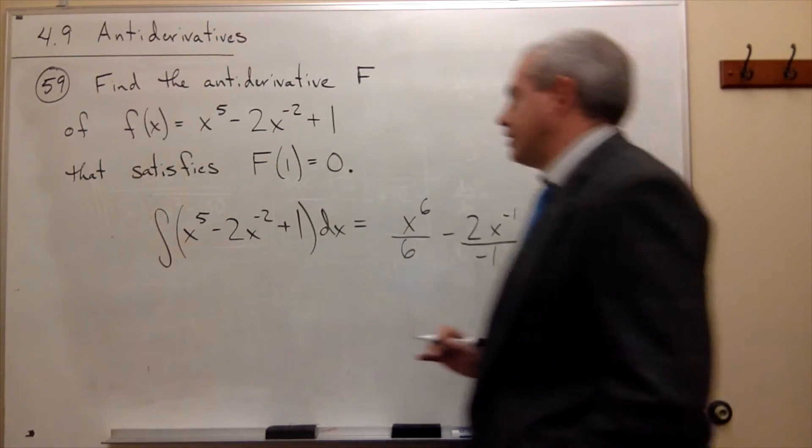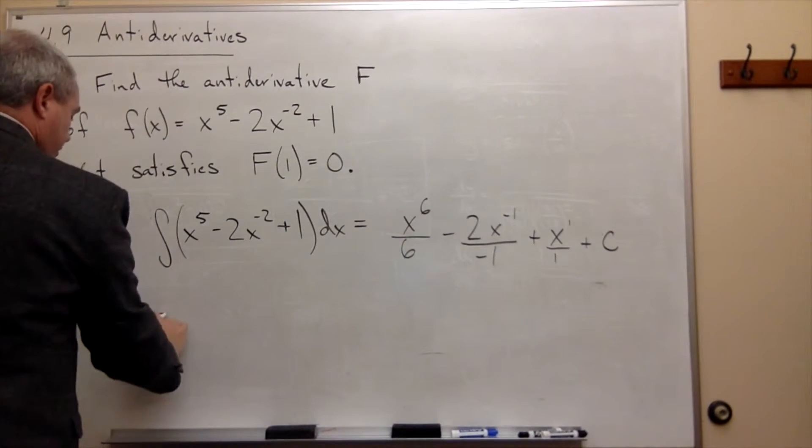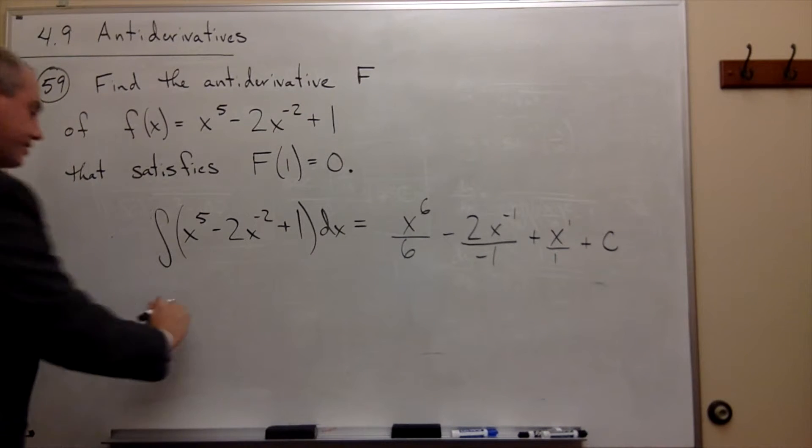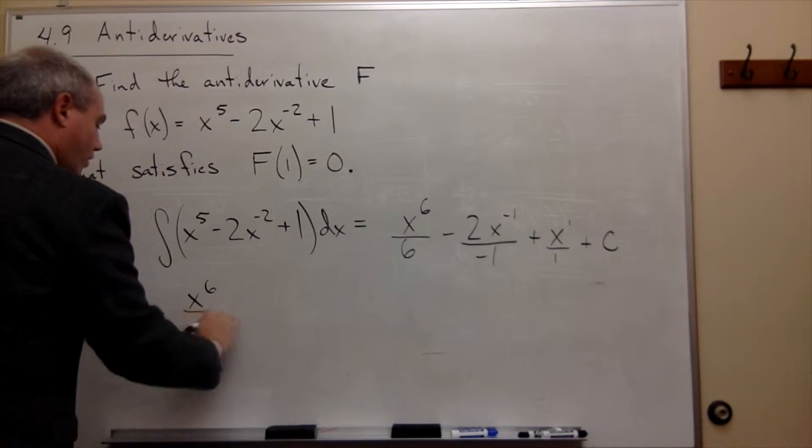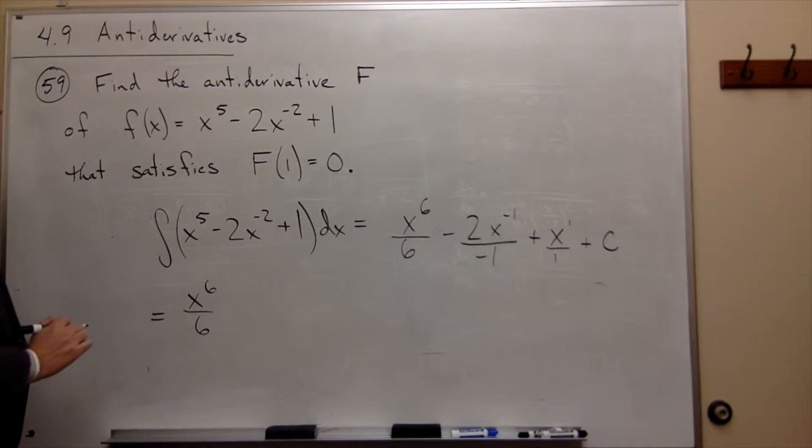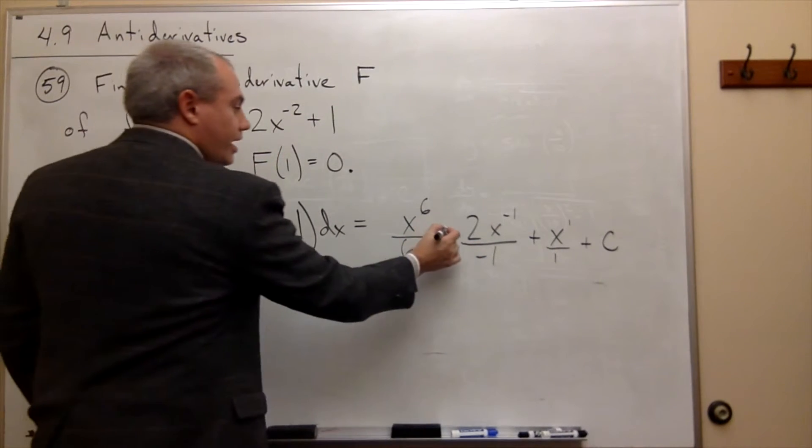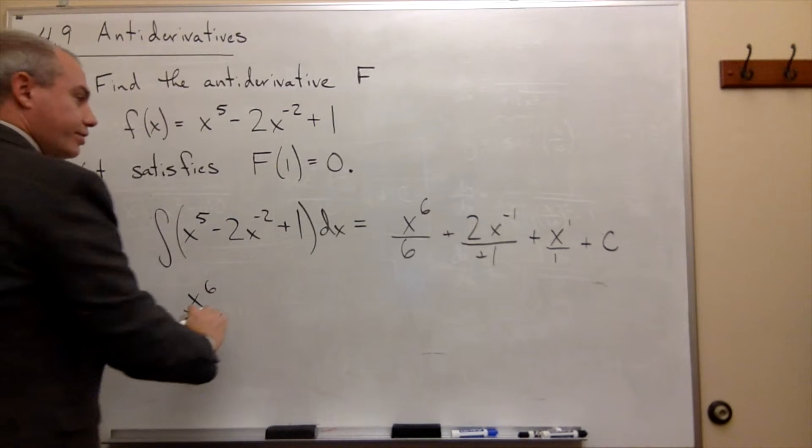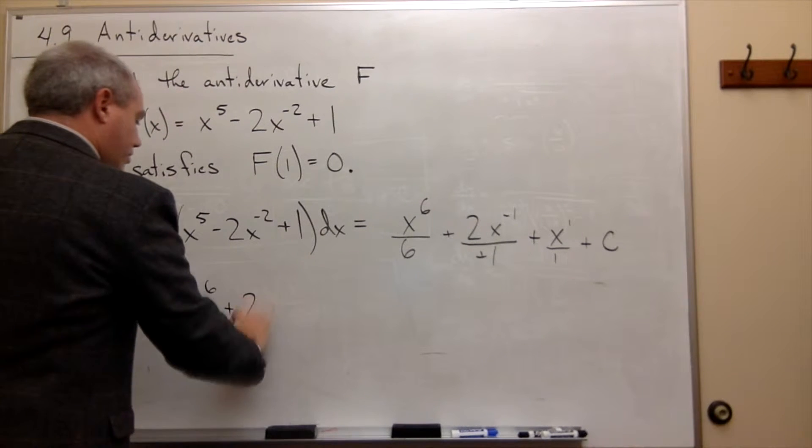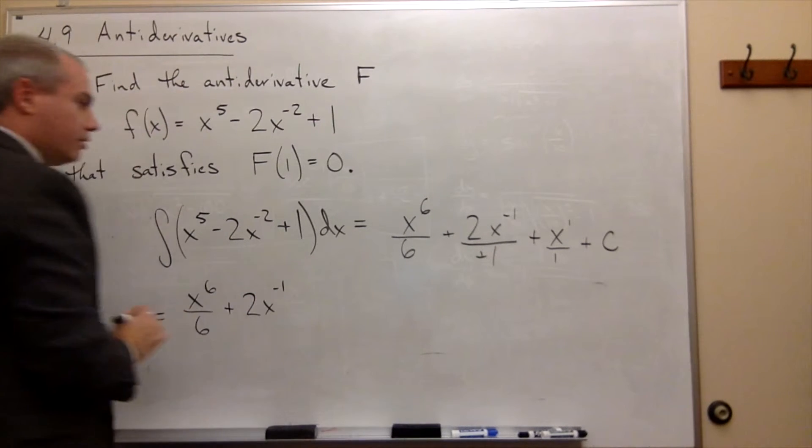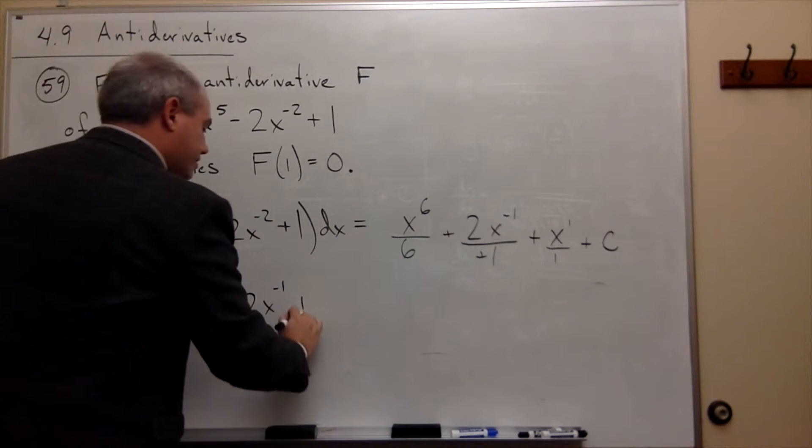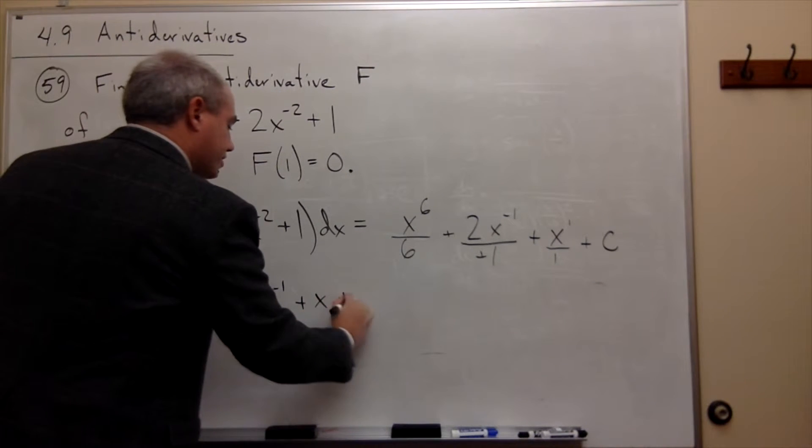Let's rewrite this. This is equal to x to the sixth over 6. Now I have a minus on top and a minus on bottom, so those will cancel, and I'm just left with 2x to the minus 1, plus x, plus c.